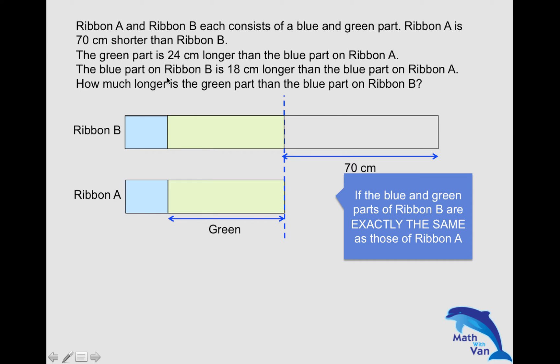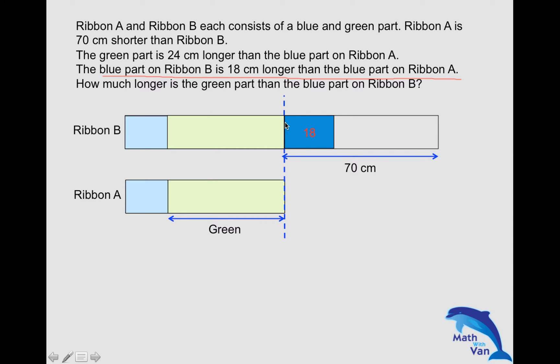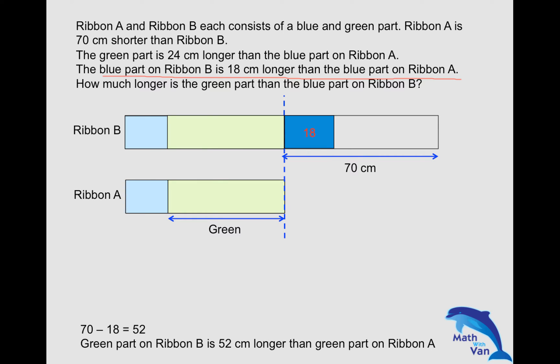Because we were told: the blue part on Ribbon B is 18 cm longer than the blue part on Ribbon A. So the difference of 70 must come from when we compare the blue and blue — B is longer by 18. And the other portion must come from comparing the green parts on both ribbons. So we have one important piece of information: 70 take away 18 gives us 52. That means the green part on Ribbon B is 52 cm longer than the green part on Ribbon A.